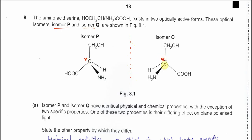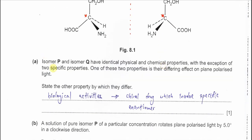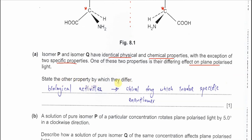So they form mirror images that are non-superimposable. Part A: isomer P and isomer Q have identical physical and chemical properties, with exceptions to specific properties. One of those is the effect on plane polarized light, which you learn with S and R notation. Another property by which they differ, which is in A2, is about biological activity — meaning chiral drugs are involved with specific enantiomers.